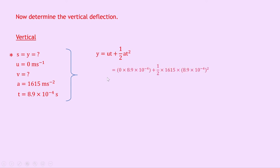And we can then sub in the numbers to get 0 times 8.9 times 10 to the minus 4 plus a half times 1615 times 8.9 times 10 to the minus 4 squared. Notice that this term here is 0 times something, so that will just cancel out. And we end up with 6.4 times 10 to the minus 4 meters, once you put that into your calculator.